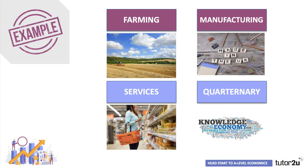We live in a modern, complex economy that makes millions of different products, but we can still group them into four main sectors. Each of those has the potential to add value, which together adds up to the data on our GDP, which gets published regularly.